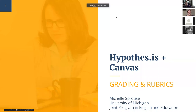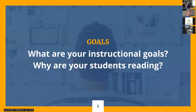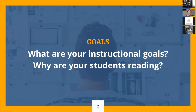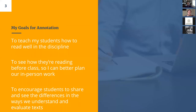Michelle shares her slide presentation and walks through how she uses Canvas and Hypothesis for grading and rubrics. To start, in terms of pedagogy, she emphasizes thinking about your goals for the course. She asks herself two questions: What are my instructional goals and why are my students reading? Those answers help clarify why she uses the tool. Students might be reading for information, for literary analysis, or in a first-year composition course, to borrow strategies from model texts to use in their own writing.